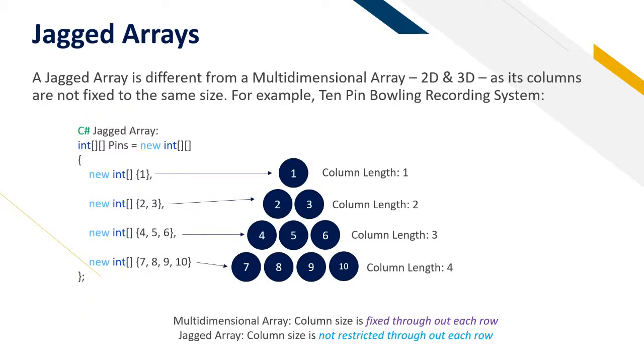A jagged array is different from a multi-dimensional array which is a 2D and 3D array as its columns are not fixed to the same size. For this example, a 10 pin bowling recording system. For this example I'll show you it using a C sharp jagged array which C sharp supports natively. Yet again Squirrel does not support this natively but you can still achieve this by using a different method.